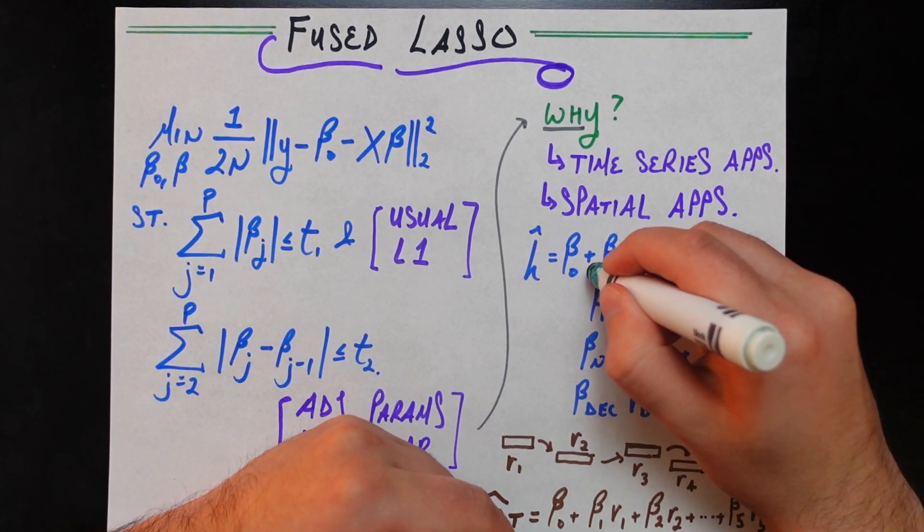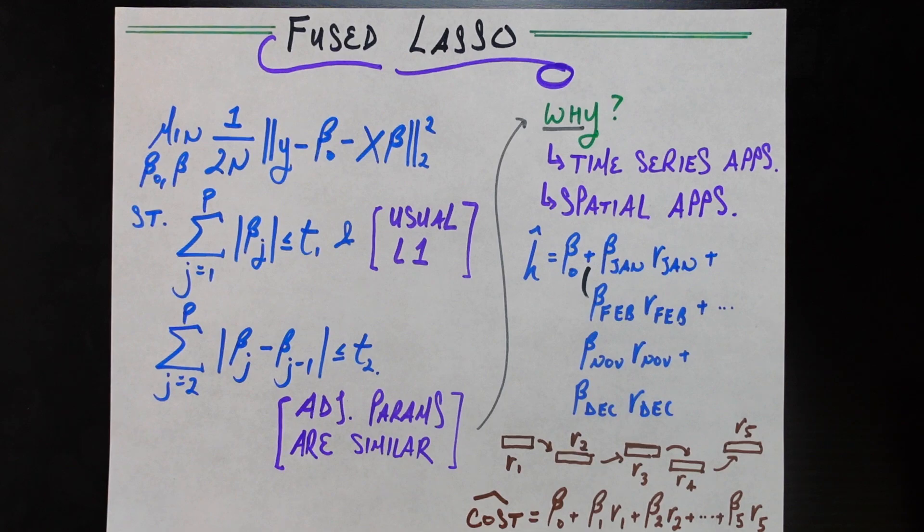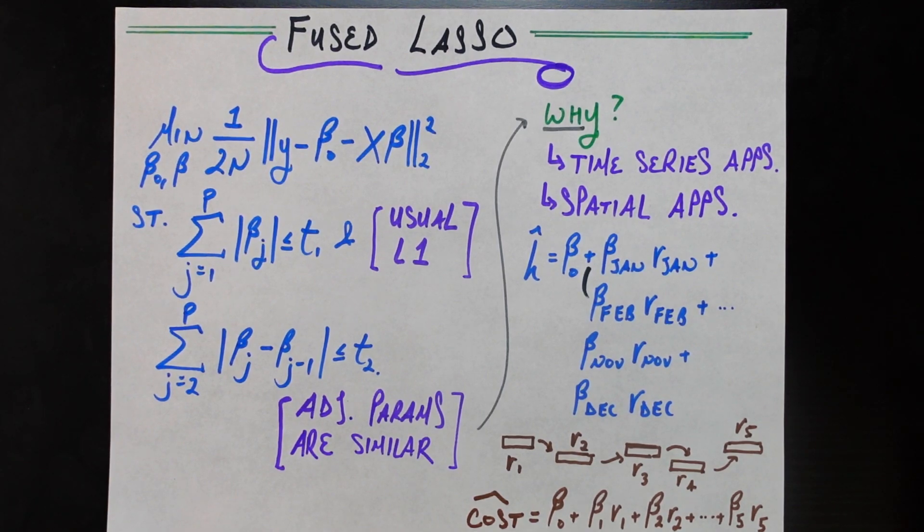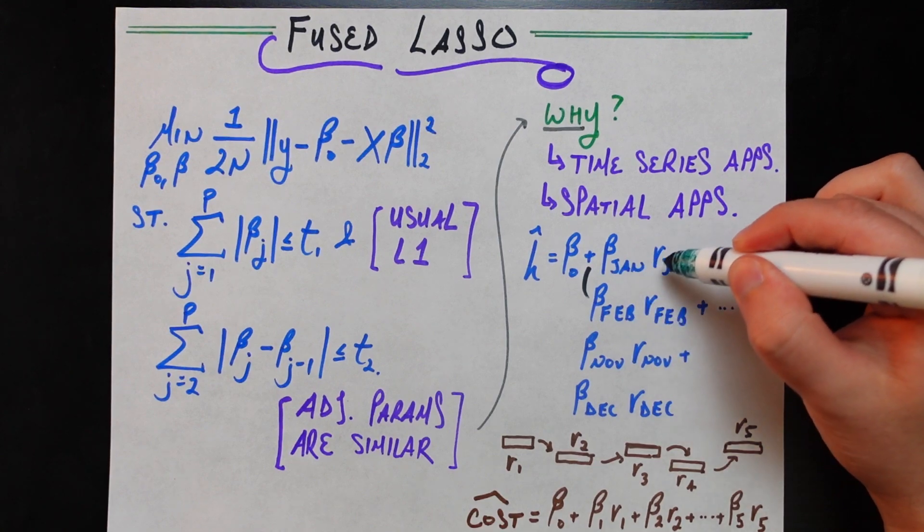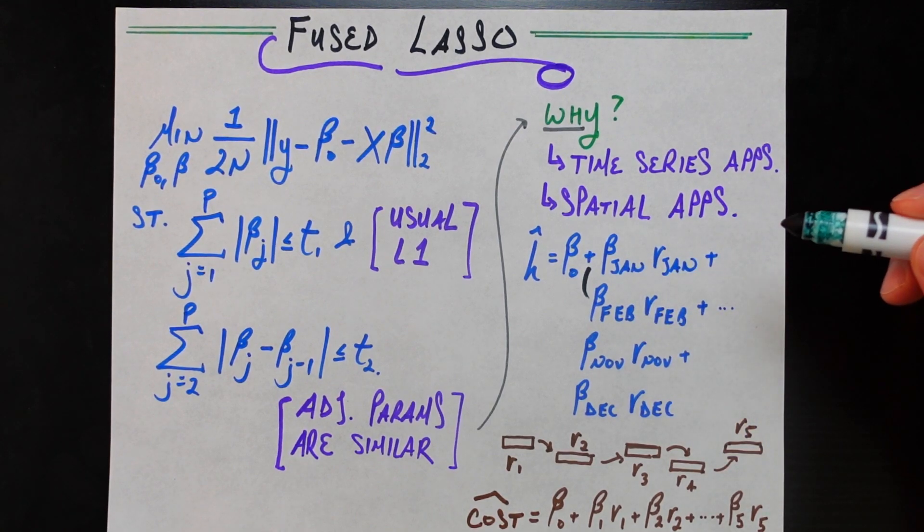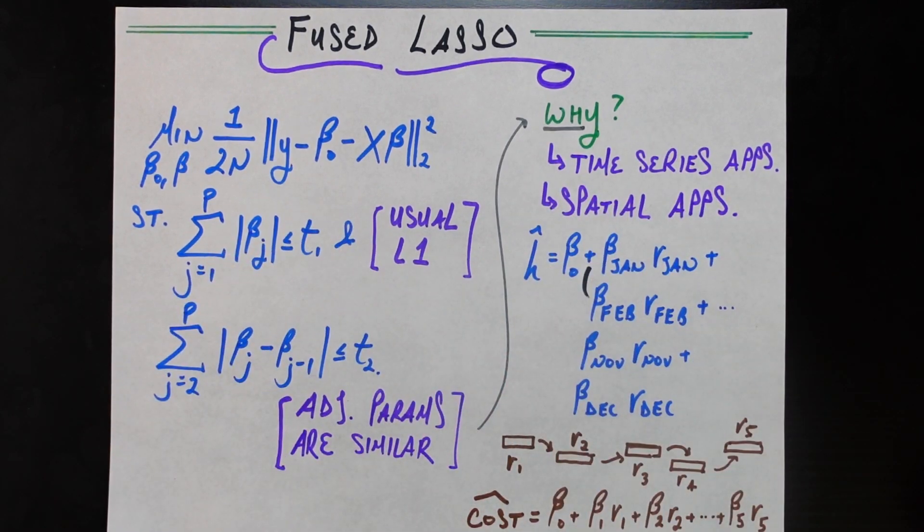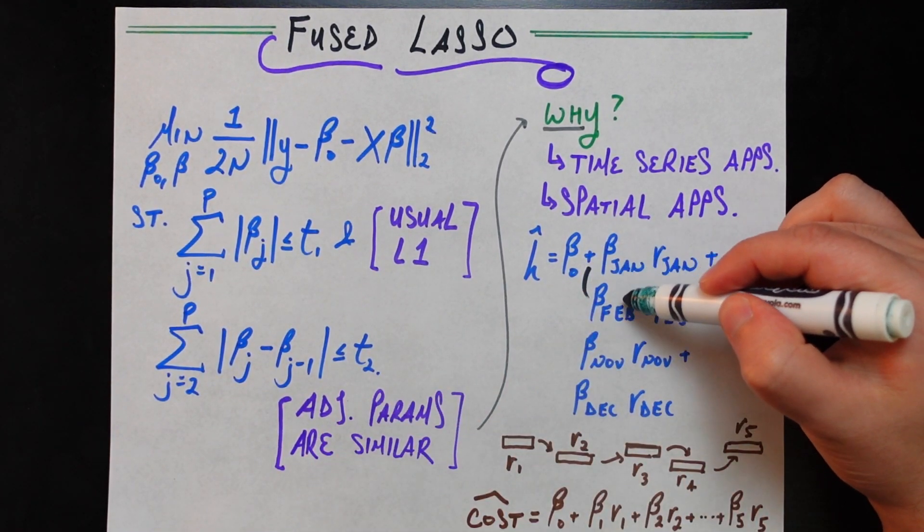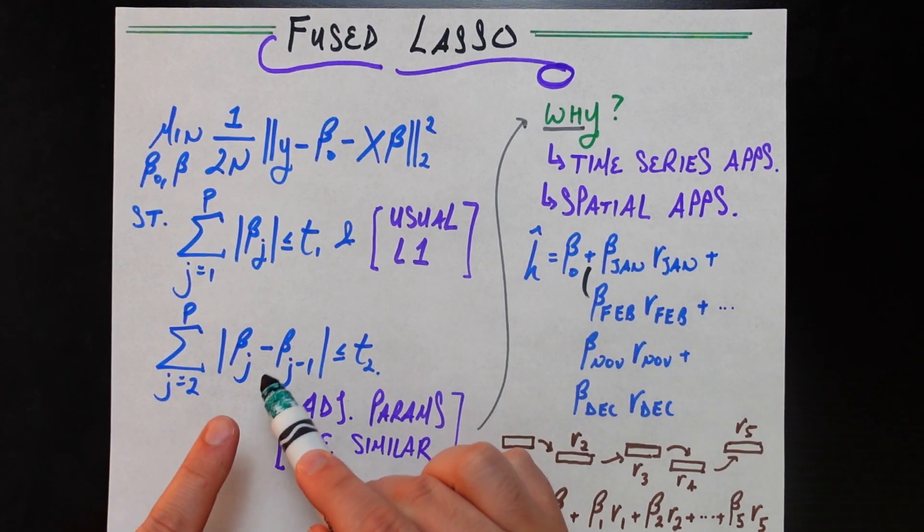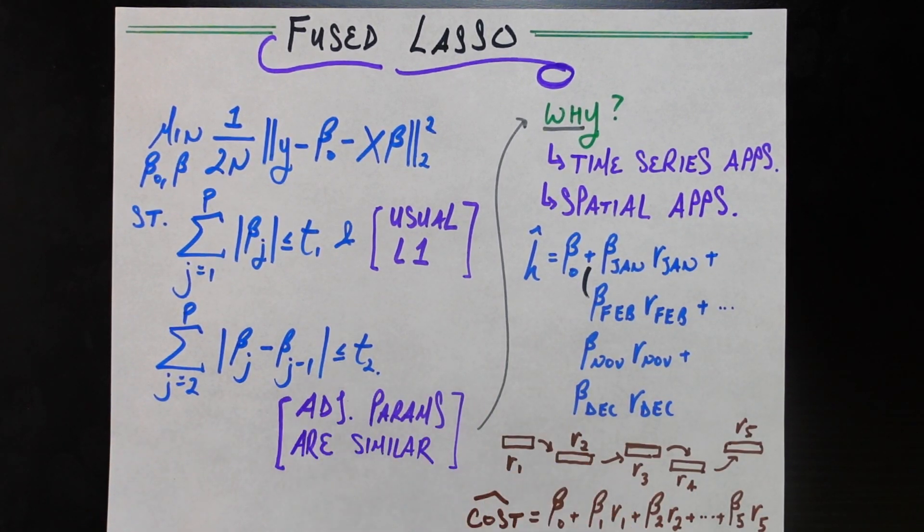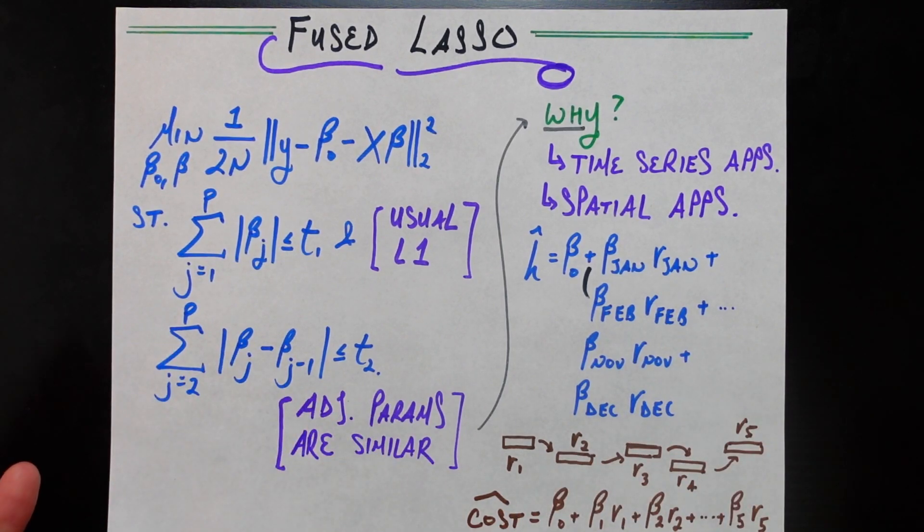So, let me use a different color here. These two betas should be kind of similar to each other. Those effects should not be too different because the weather in Jan and Feb should not be too different. And I would consider it a failure or something alarming in the model if the rainfall between those two months, the effect of those rainfall levels had very different effects on the price of the house. And so, for that reason, now, it makes exact sense why we would want these adjacent betas, these adjacent betas, to have an absolute difference, who is pretty small, who is not too large.